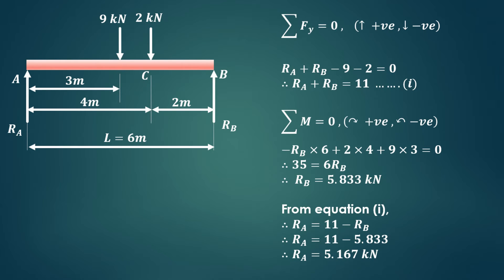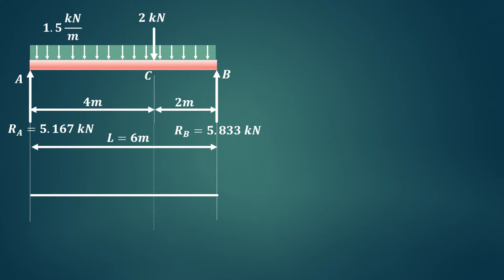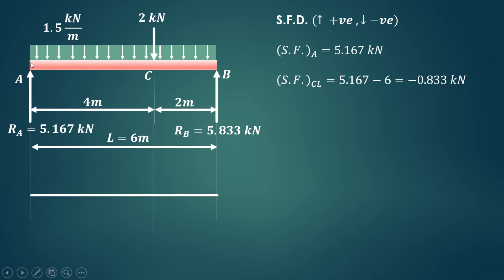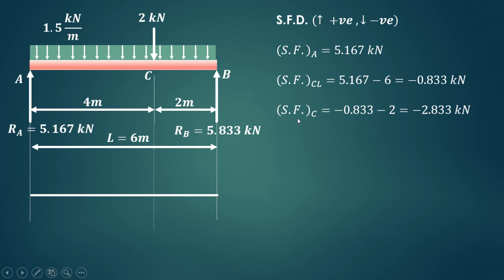Now we draw the shear force diagram. The convention for a simply supported beam: upward forces are positive, downward forces are negative. Starting from the left hand support A, shear force at A = +5.167 kN. For shear force at C-left, we consider all forces to the left of C: RA = +5.167, minus the UDL from A to just left of C = 1.5 × 4 = 6 kN, giving −0.833 kN.